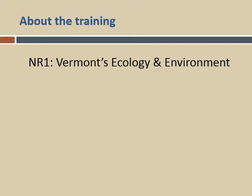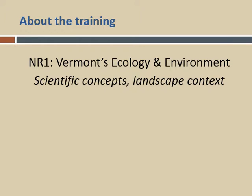This presentation is a sequel to a training many of you have already attended — what we call NR1, Vermont's Ecology and Environment: An Introduction to Town Planning for Natural Resources. NR1 was divided into three sections. The first was about the history of the Vermont landscape as context for understanding our natural resources today. The second was about the scales — landscape, natural community, and species scale — at which different natural resources exist. The third section was about human communities, the town planning process, and the tools that can advance conservation efforts.